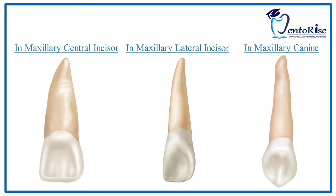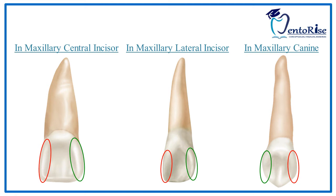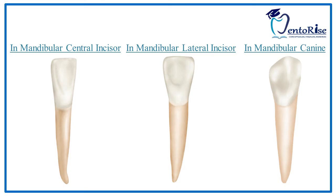Now let's understand these marginal ridges with the help of figures. In incisors and canines, the marginal ridges are present on the lingual surface. The marginal ridge facing towards the mesial side is called the mesial marginal ridge, marked in red in the figure. The marginal ridge facing towards the distal side is called the distal marginal ridge. These ridges are named according to the surfaces towards which they face. Similarly, in mandibular incisors and canines, the one facing towards the mesial side is marked in red as the mesial marginal ridge, and the one facing towards the distal side is marked in green as the distal marginal ridge.